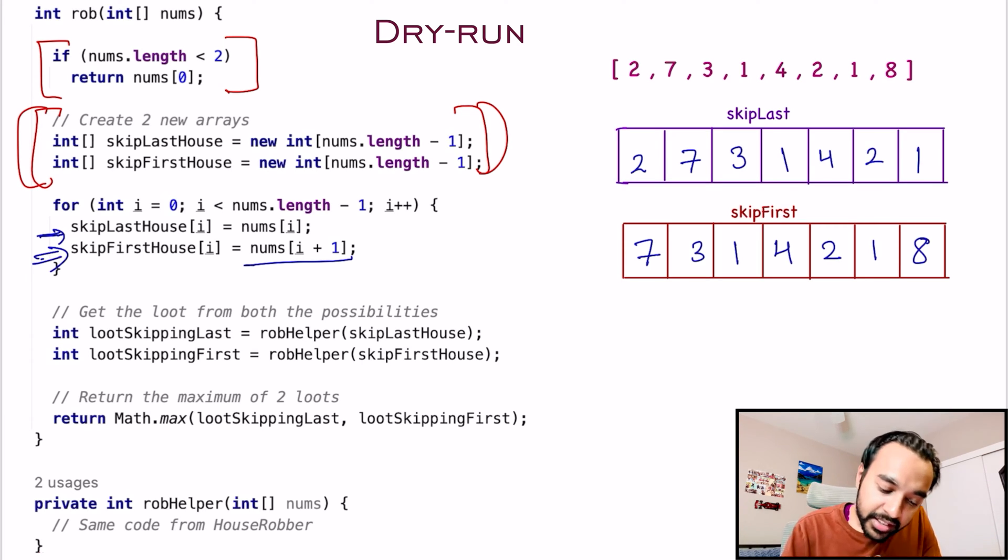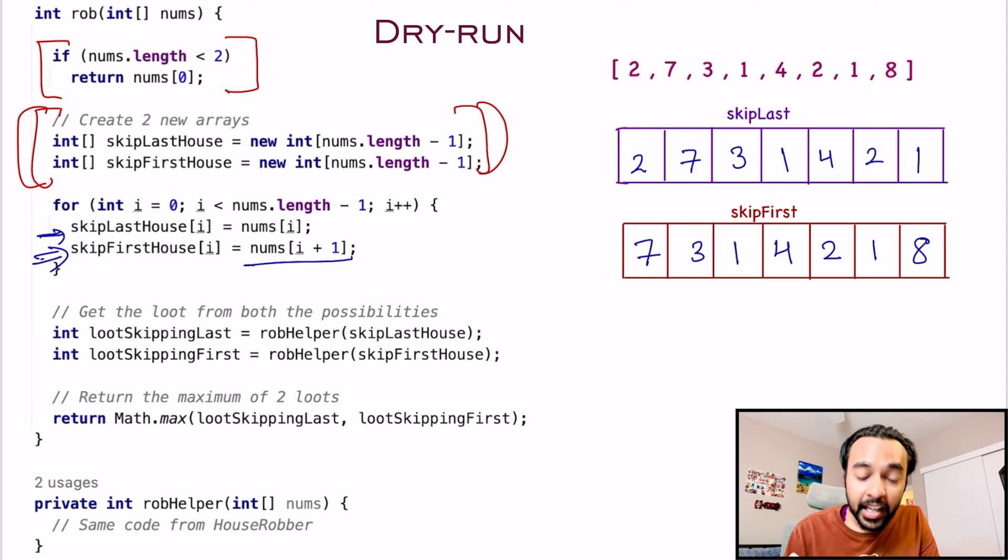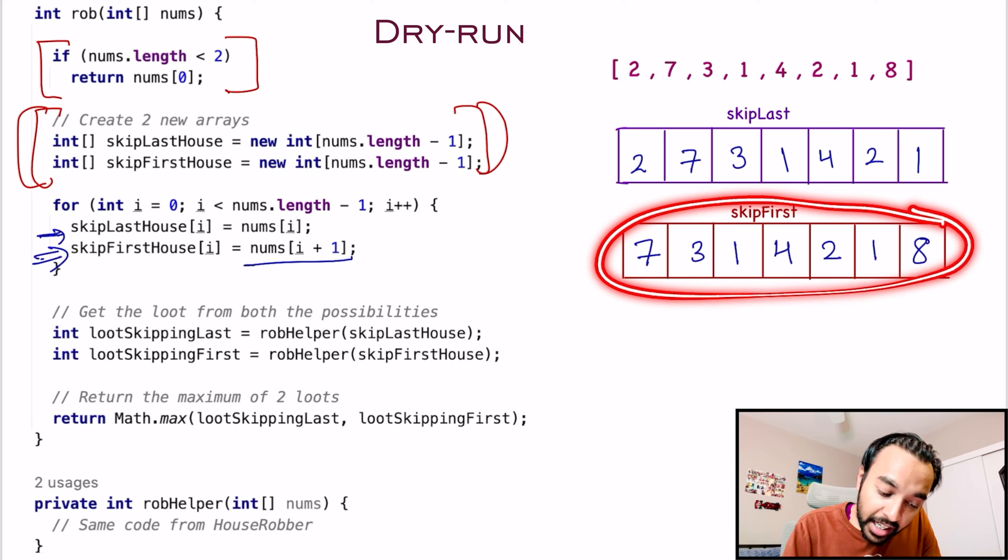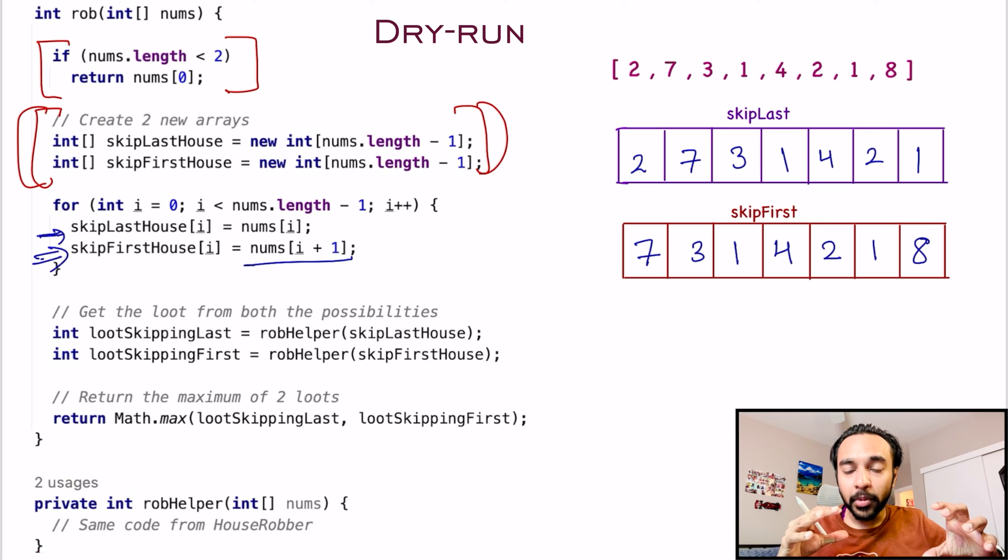So you can see that in the skip last array, I have skipped out the last house 8. And in the skip first array, I have skipped the first house that is 2. So now you have got two individual problems.